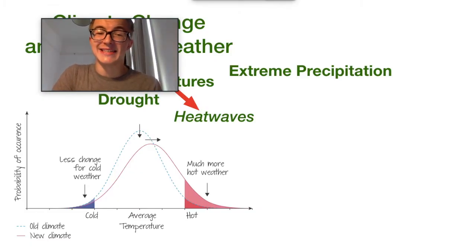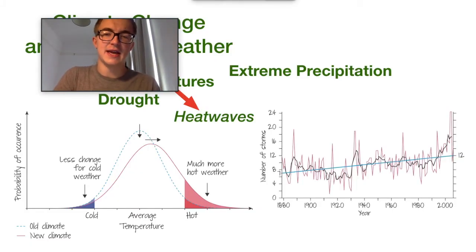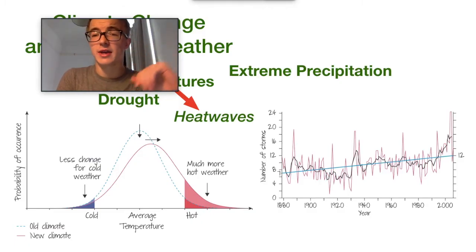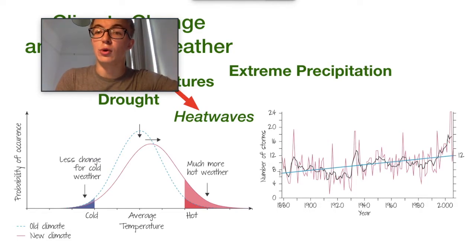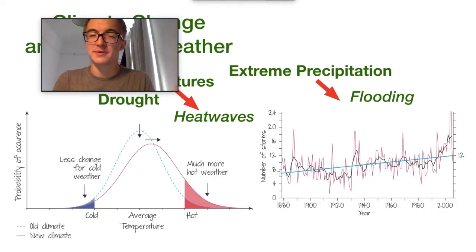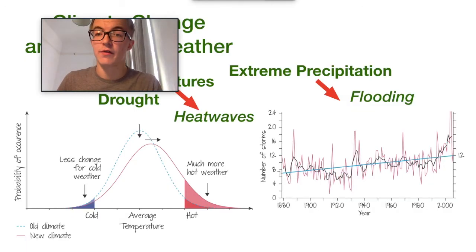The next point is extreme precipitation. This graph looks at the last 130 years of the number of storms on the planet. The data varies year on year — a natural part of extreme weather — but the long-term trend line shows that there are more and more extreme precipitation events. That can lead to flooding. Both extreme temperature and extreme precipitation have massive implications for human life, as well as animal and plant life on Earth.